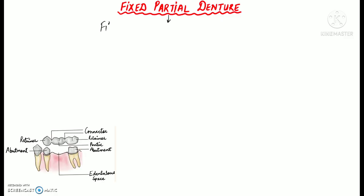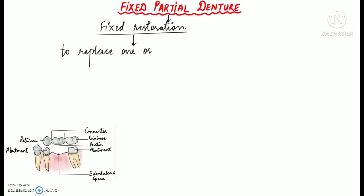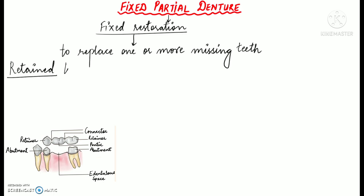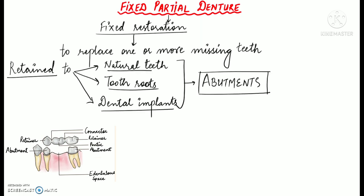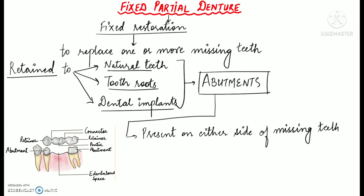A fixed partial denture is basically a fixed dental restoration which is used to replace one or more missing teeth, and it is retained to the natural teeth, tooth roots, or even dental implants which act as abutments. These natural teeth, tooth roots, or dental implants can all act as abutments, and they are present on either side of the gap or the missing teeth.